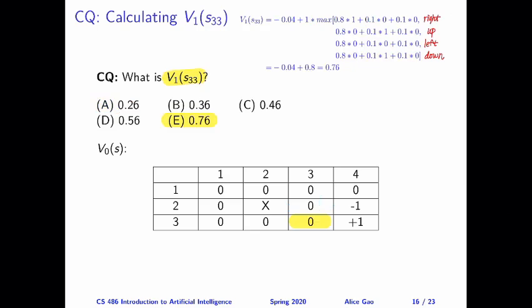Let's look at the second question: what is V sub 1 of S3,3? As highlighted on the grid world, the process of calculation is extremely similar, so I won't explain the process again. But one thing to be careful about is that we just calculated the value of V sub 1 of S2,3. You might have crossed out that zero and put minus 0.04. But when calculating V sub 1 of S3,3, you should plug in the old value of zero for S2,3 rather than the new value of minus 0.04 — that's the only thing you need to be careful about.